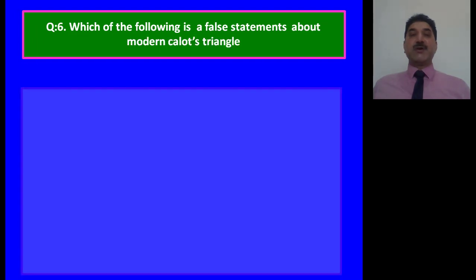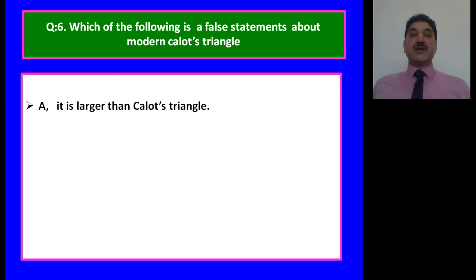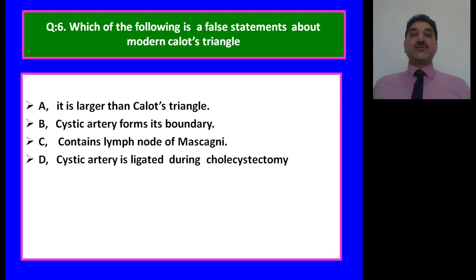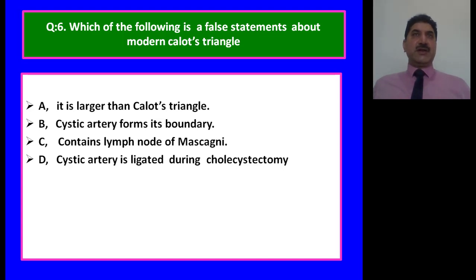Which of the following is a false statement about modern Calot's triangle? Options: A — it is larger than Calot's triangle; B — the cystic artery forms its boundary; C — it contains the lymph node of Mascagni; D — the cystic artery is ligated during cholecystectomy. The answer is B. The cystic artery forms the superior boundary of the original Calot's triangle, not the modern one. The modern Calot's triangle is bounded superiorly by the liver, laterally by the cystic duct, and medially by the common hepatic duct — it lies between two tubes and the liver, whereas the original Calot's triangle lies between three tubes.